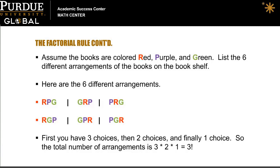You may be wondering why the factorial rule works. If you look at the example, we start with three different choices of books to put on the shelf first. Once we have placed the first book, we have two choices remaining for the second book. And finally, we have one book left to shelf. The total number of arrangements, then, is three times two times one, or three factorial.